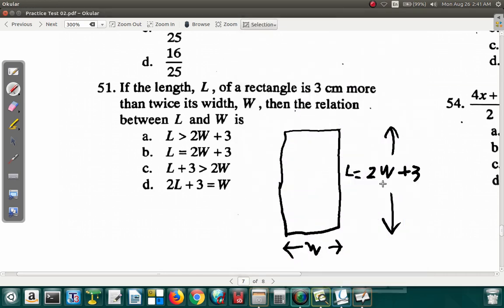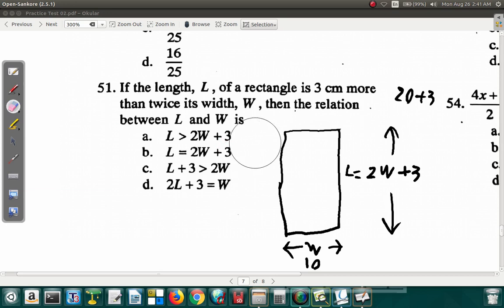So the length 2W, 3 centimeters more than twice its width. It could be, for example, if the width was 10 centimeters, the length twice 10 is 20. And if you measure something 20 and another 23, the 23 one is 3 centimeters more. So you add 3 centimeters to it. So that's question 51.